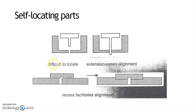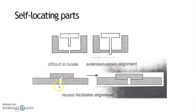Similarly, when we consider the downward motion of a tool that is difficult to locate, we can extend the bottom part of the tool to reduce alignment difficulty — the extension eases alignment. Likewise, when providing races between two mating component parts, arranging them in a specific manner makes alignment very easy and helpful.